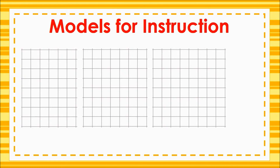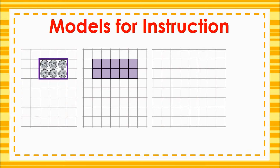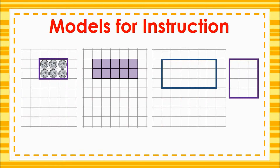Students should then move on to representing arrays on graph paper, first by placing small objects on the paper to find the rows and columns and tracing around the entire array. Students may then want to move to tracing each individual square in the rows and columns, then just an outline of the rows and columns to demonstrate the array. Cutting the arrays out of the graph paper is also a great way for students to show their understanding of rows and columns. Using graph paper also prepares students for understanding how arrays can model area in later grades.